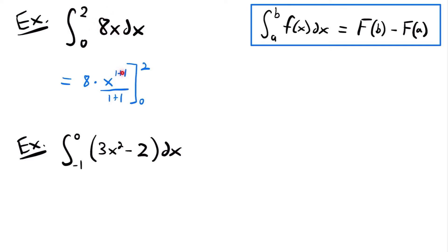We added 1 to our exponent of x, so we have 1 plus 1, and then divided by that new exponent, so we have 1 plus 1 in the denominator. 1 plus 1 is 2, and 8 divided by 2 is 4. So this is going to be equal to 4 times x to the power of 2, which is x squared, and that's still going to be evaluated from 0 to 2.